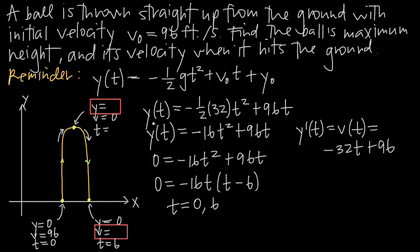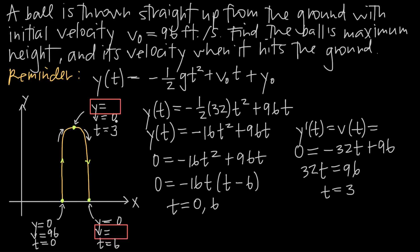Velocity equals zero when the ball reaches its maximum height, so we set negative 32t plus 96 equal to zero. Adding 32t to both sides gives 32t equals 96, and dividing both sides by 32 gives t equals 3. So the ball reaches its maximum height after 3 seconds, when velocity is zero.